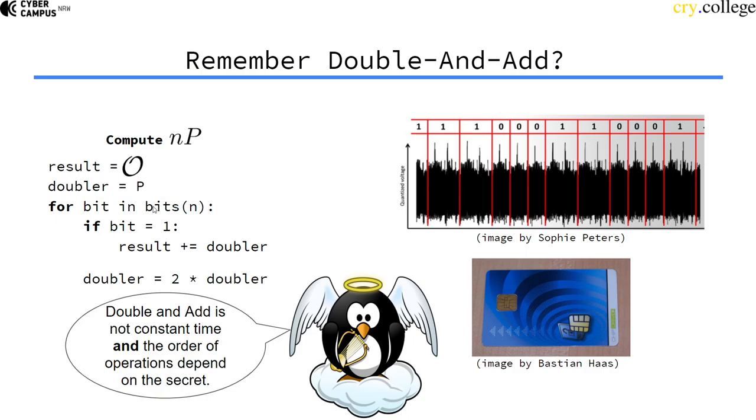we can actually see the order of operations. Every time there was a double operation, every time there was an add operation and a double operation, we know that the secret scalar must have been a 1.